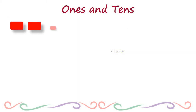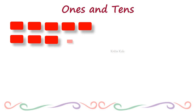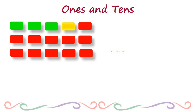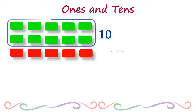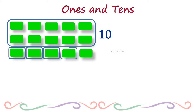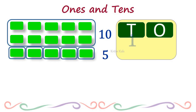Here is one more example. Let's count them: 1, 2, 3, 4, 5, 6, 7, 8, 9, 10 — here is a 10s block — and 1, 2, 3, 4, 5. Can we put these remaining 5 in a 10s block? No. We have to use 1s blocks: 1, 2, 3, 4, 5. So we have five 1s blocks. At the 1s position we have 5 and at the 10s position we have 1. The number is 15.